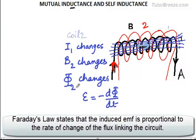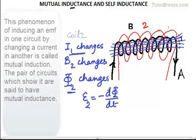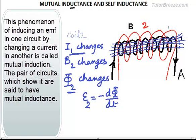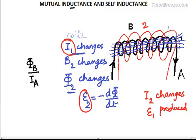You know that a changing flux produces an induced EMF — this is Faraday's law. So as a result of this changing flux in coil 2, we will get an induced EMF in coil 2, and the cause of this induced EMF is the changing current in coil 1. This phenomenon of inducing an EMF in one circuit by changing a current in another is called mutual induction, and the pair of circuits are said to show mutual inductance.